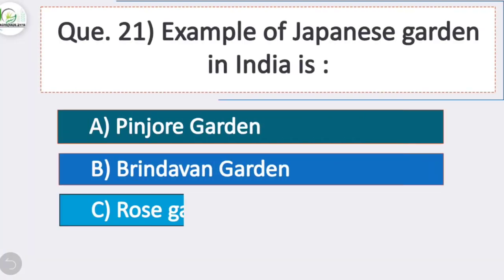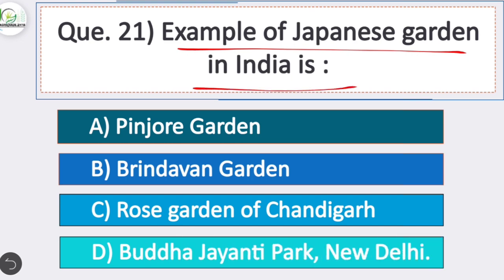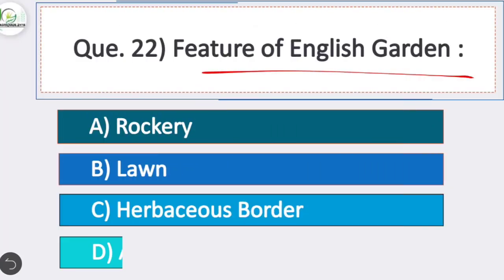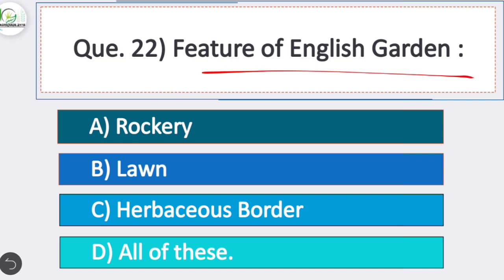Question 21: Example of Japanese Garden in India — option D is correct — Buddha Jayanti Park, New Delhi. Question 22: Features of English Garden — the options are rockery, lawn, herbaceous border, and D: all of these. The correct answer is all of these. The features of English Garden are rockery, lawn, and herbaceous border.